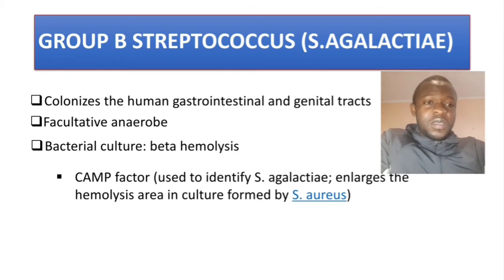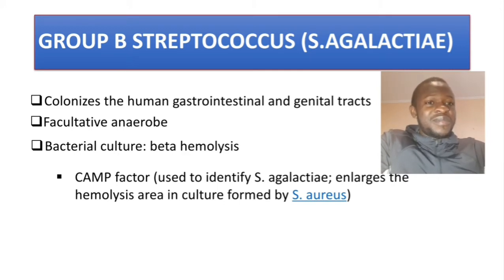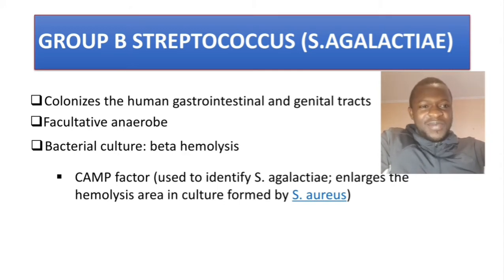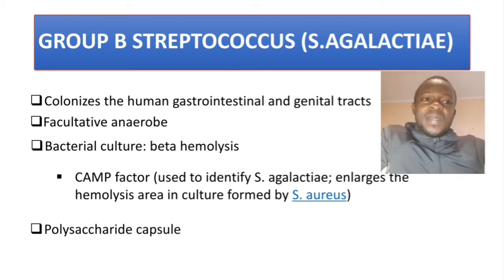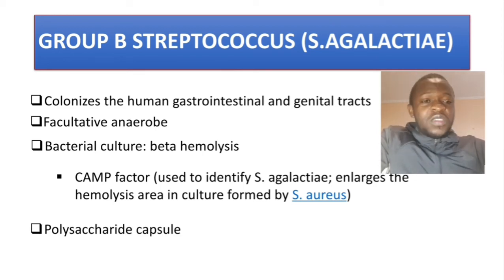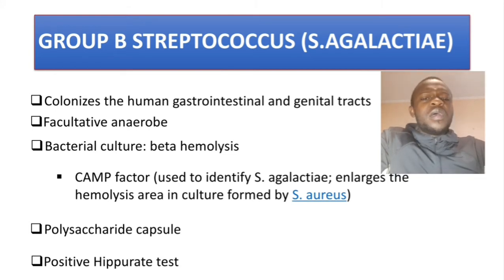If Streptococcus agalactiae is present, it will increase the area of hemolysis caused by Staph aureus. The other thing you need to know is it has a polysaccharide capsule.